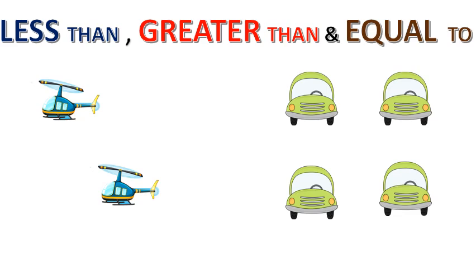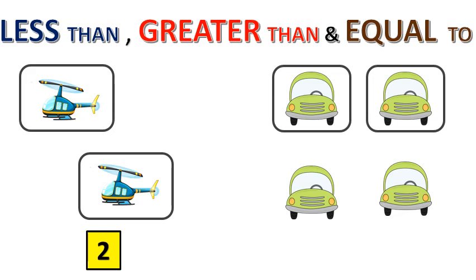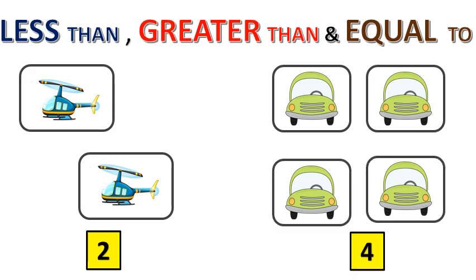Now let's take another one. Here you have some carts and some helicopters, and you have to find which one is less than. Let's count the helicopters: 1, 2. So we have 2 helicopters. Now let's count the cars: 1, 2, 3 and 4. So we have 4 cars. Which one is less? Here, 2 is less than 4. The number of helicopters is less than the number of cars.